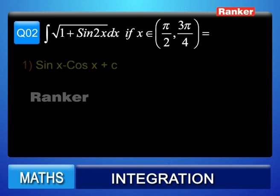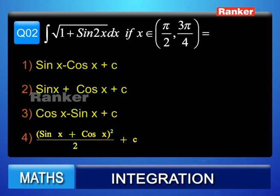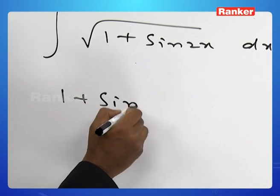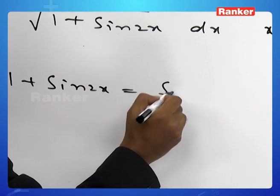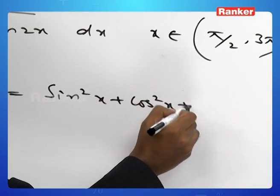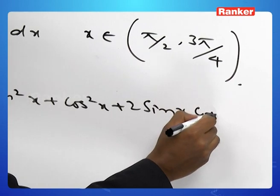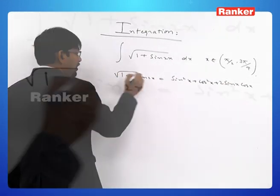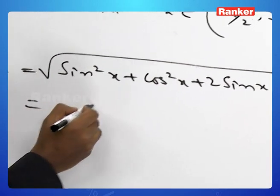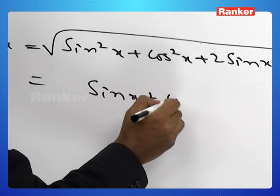Let's move on to question 2: integral of √(1 + sin 2x) dx for x in the open interval (π/2, 3π/4). The options are: sin x minus cos x plus c; sin x plus cos x plus c; cos x minus sin x plus c; and (sin x + cos x)² / 2 plus c. We know that 1 + sin 2x can be written as sin²x + cos²x + 2 sin x cos x, so the square root becomes |sin x + cos x|.